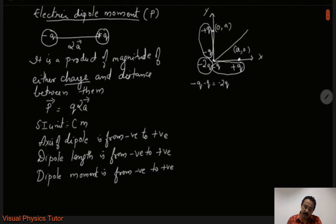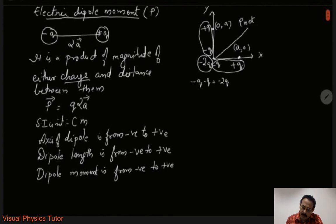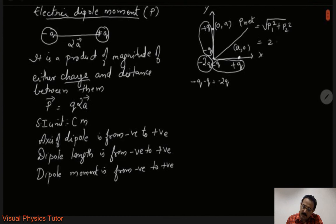To find the net electric dipole moment, we use vector addition. P net is given as the square root of P1 squared plus P2 squared. Both P1 and P2 are equal in magnitude because they are at the same distance A and the charges are also the same. So we can write this as the square root of 2P squared, which simplifies to P√2.